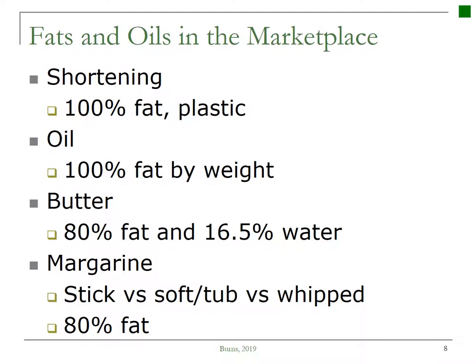Fats and oils in the marketplace — there are so many that we can purchase. I'm going to provide some information about four different categories. First, shortening: shortening is made from vegetable oil that has been partially hydrogenated. It is 100% fat and it is a plastic fat, so that means it can be moldable. This has great implications when making pie pastry and biscuits that need to have that flakiness. Plastic fats such as shortening and lard can be interchanged with very little effect on the baked product.